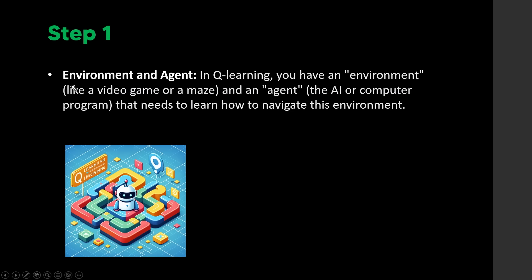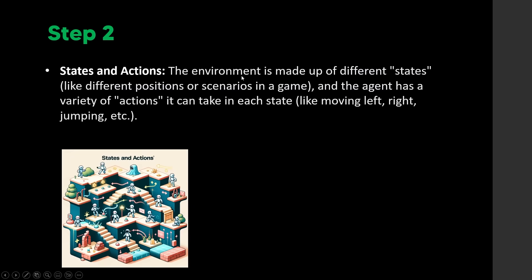Step one is the environment and the agent. In Q-Learning you have an environment — like a video game or a maze — and an agent, which is the AI program that needs to learn how to navigate it. Step two is states and actions: the environment is made up of different states, and the agent can take different actions, like moving left or right to different positions.